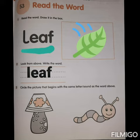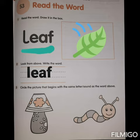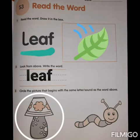Then question number three is: circle the picture that begins with the same letter sound as the above. In question number three, again what you have to do is look at both the pictures. The first picture is that of a lamp, and the second picture is that of a caterpillar. You have to circle the picture that begins with the L sound. So the picture is that of a lamp — circle this picture.